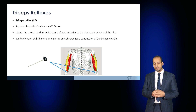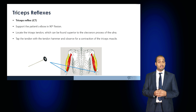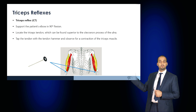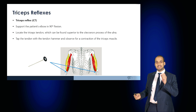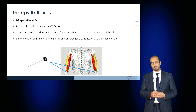The third reflex is the triceps reflex, mediated through C7. Support the patient's elbow at 90 degrees of flexion, locate the triceps tendon superior to the olecranon process of the ulna, tap with the tendon hammer, and observe for contraction of the triceps muscle. Remember to compare reflexes on the left and right. Deep tendon reflexes are hyperreflexic with upper motor neuron conditions and hyporeflexic with lower motor neuron conditions.